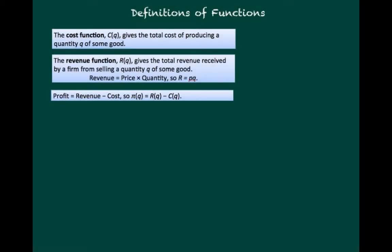As we begin our discussion of economics and marginal analysis, it's important to define three functions that are the building blocks in economics. The first one is the cost function, C(q), which gives the total cost of producing a quantity Q of some good. Q is represented on the horizontal axis.